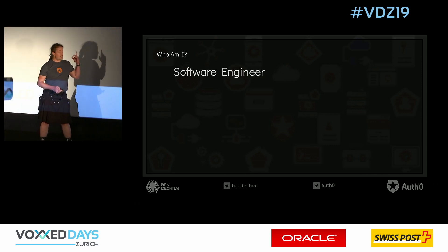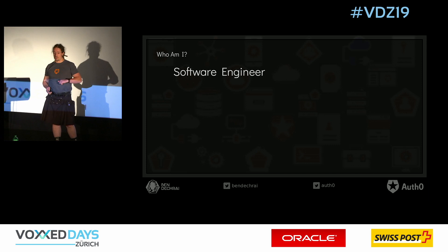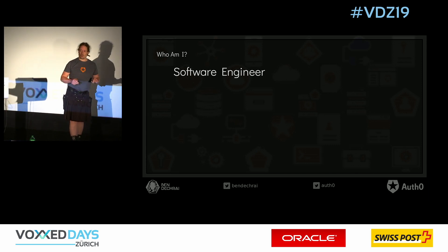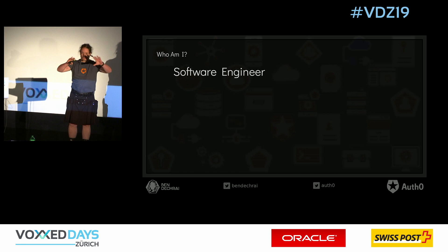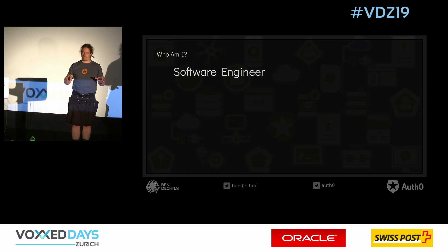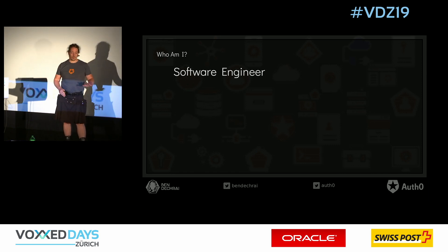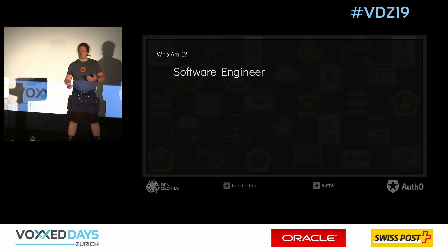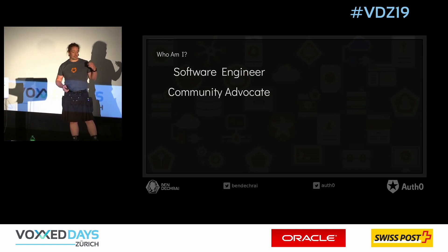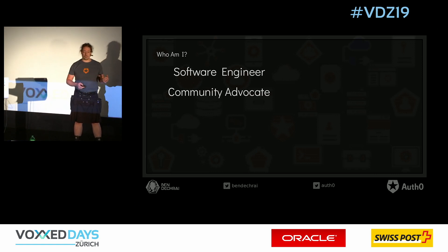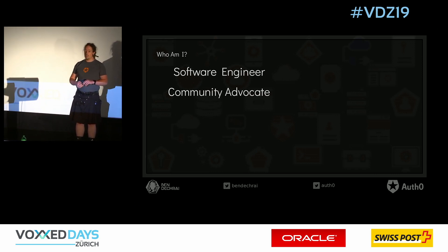I'm a software engineer. I've been a software engineer for about 20 years. I also talk really quickly, and despite the lights, I can actually see most of you. So if I talk too quickly, just wave your hand and tell me to slow down. I'm a software engineer since about 1999, and I'm a community advocate — I go to conferences and meetups, and I've run a couple of events as well.